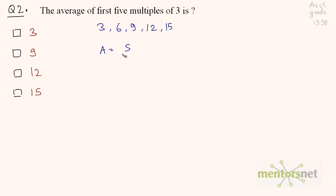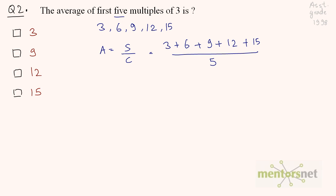Average equals sum divided by count. So the sum is 3 plus 6 plus 9 plus 12 plus 15, divided by 5. Adding them: 3 plus 6 is 9, plus 9 is 18, plus 12 is 30, plus 15 is 45. So 45 divided by 5 gives you 9 — there is the answer.